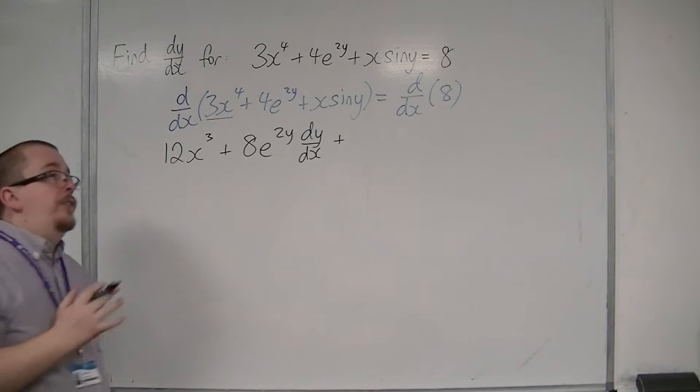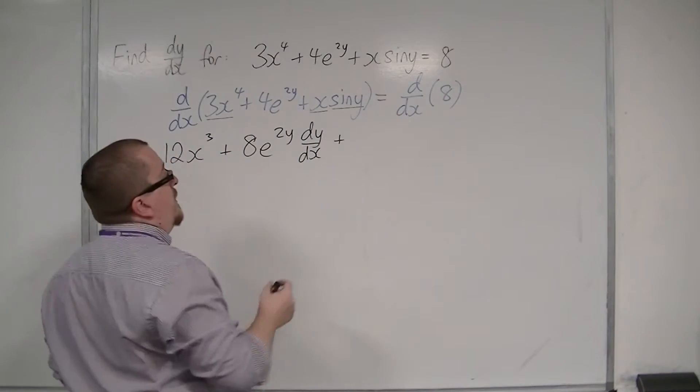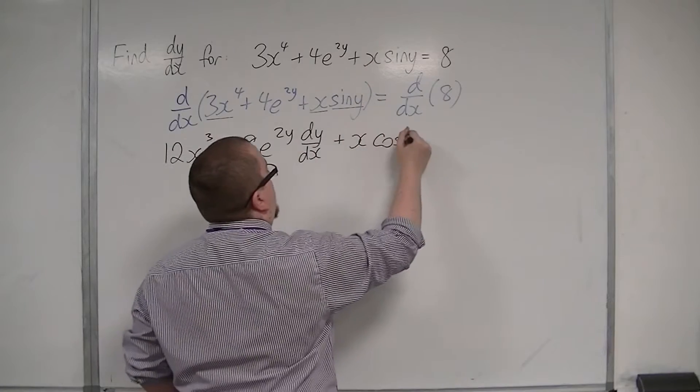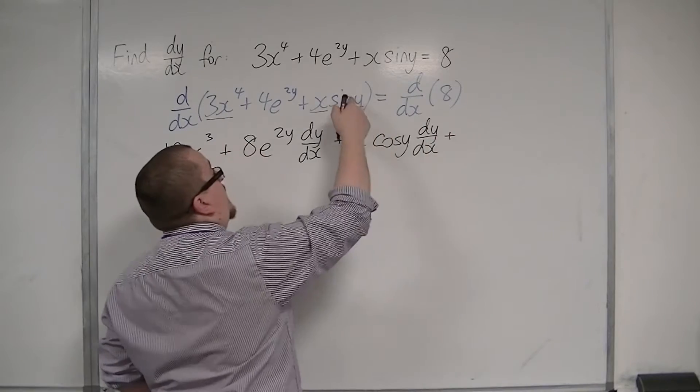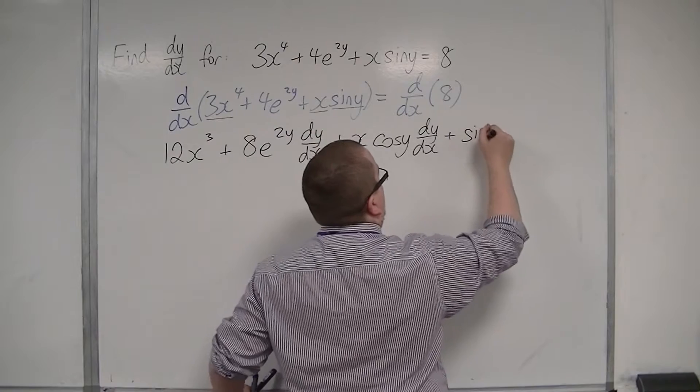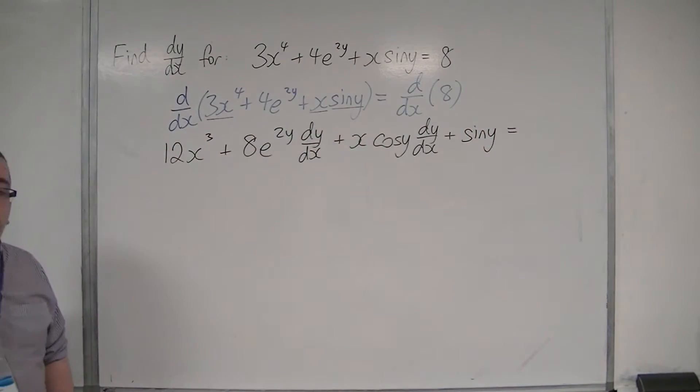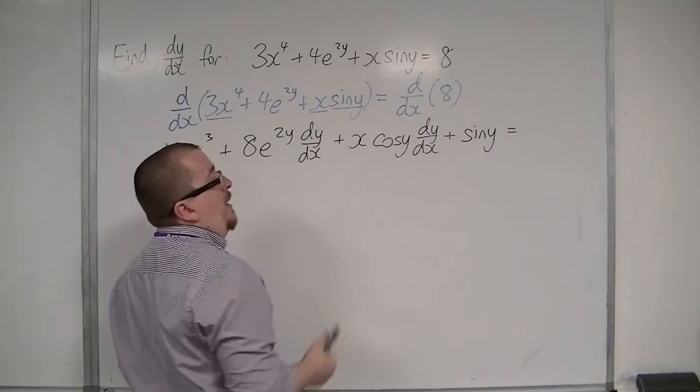Now I've got to differentiate that x sine y. I'm going to have to use the product rule to differentiate that. So it's the first times the derivative of the second, which is cos y dy by dx, plus the second times the derivative of the first, so sine y times 1. Notice how there's no dy by dx that comes on the end there, because I'm not differentiating y in that second part of the product rule.